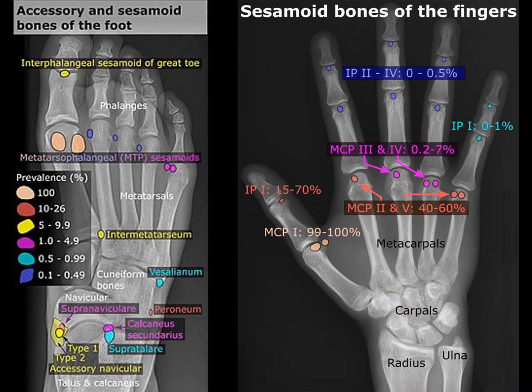The occurrence of other sesamoid bones is far more variable. What you're seeing here are sesamoid bones and their frequency of occurrence in the foot and in the hand. Notice that we also have accessory bones, which are quite similar, associated with joints within the ankle.